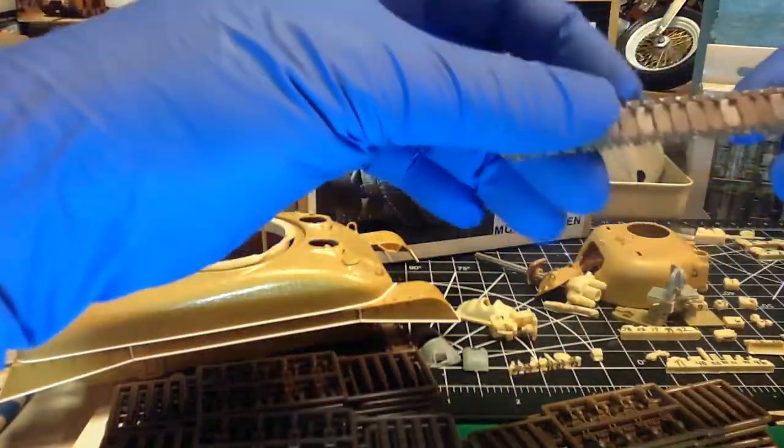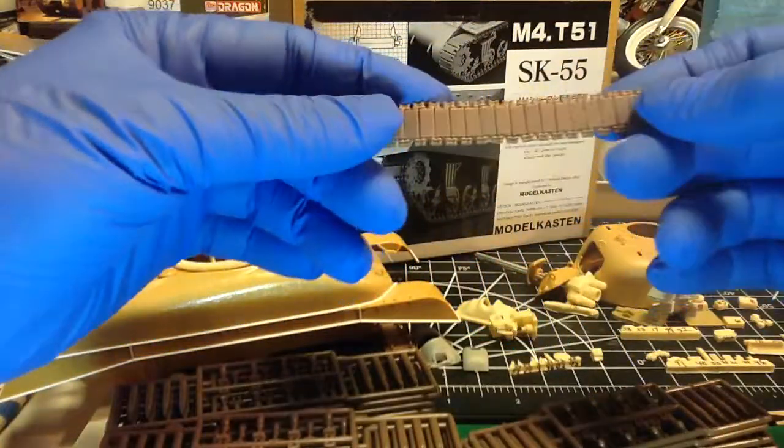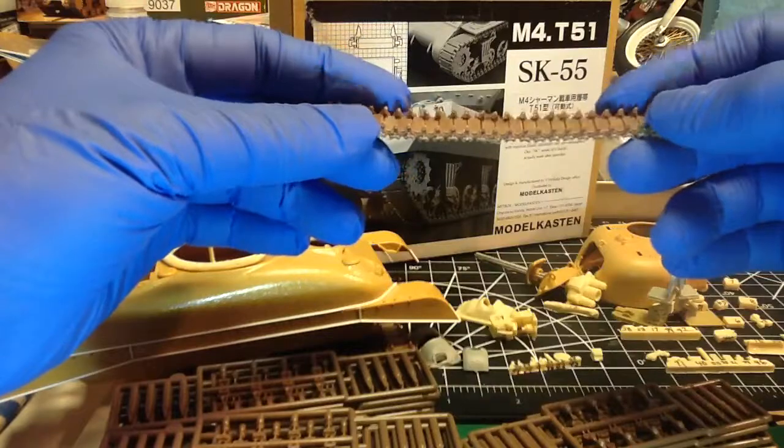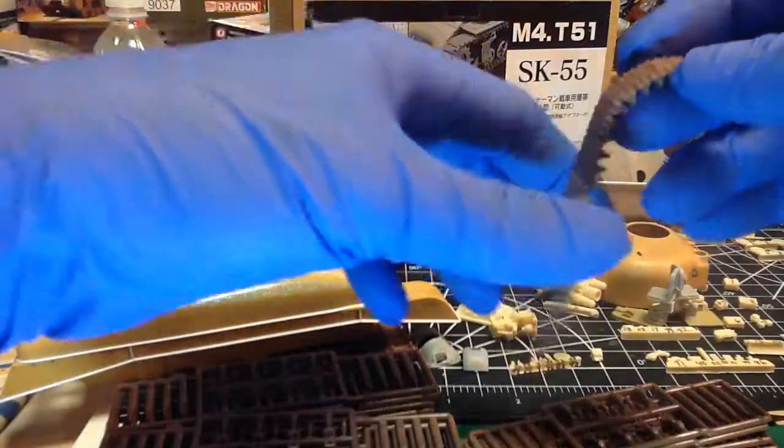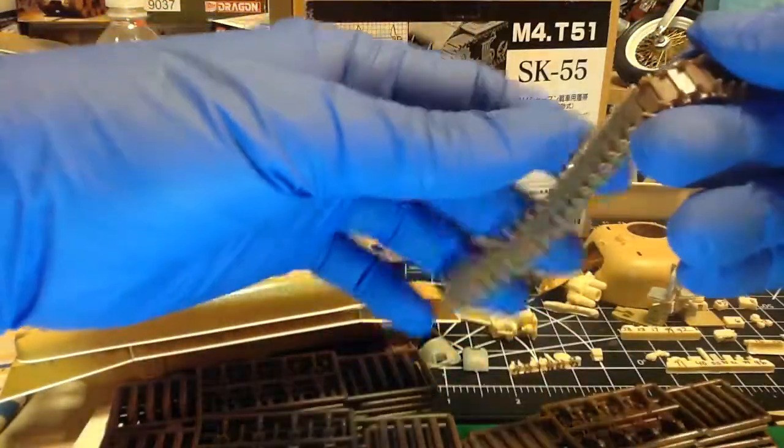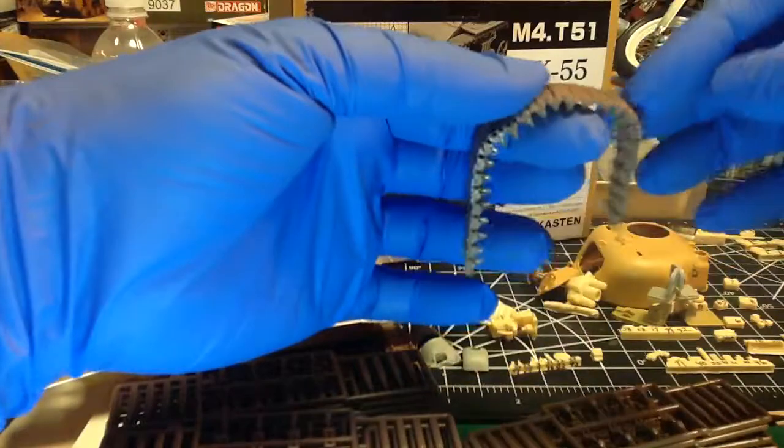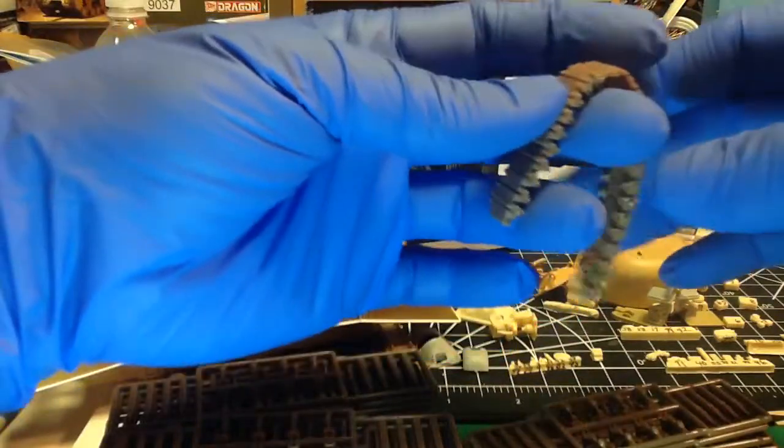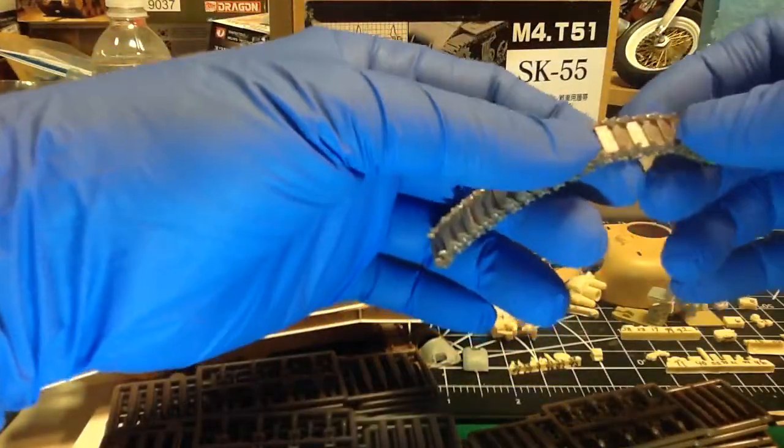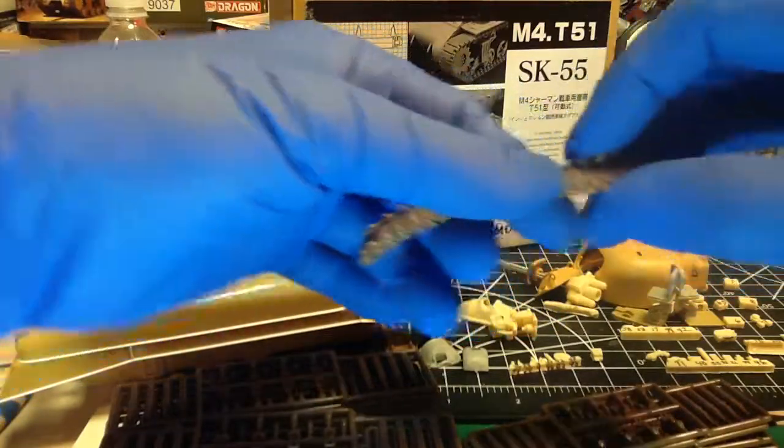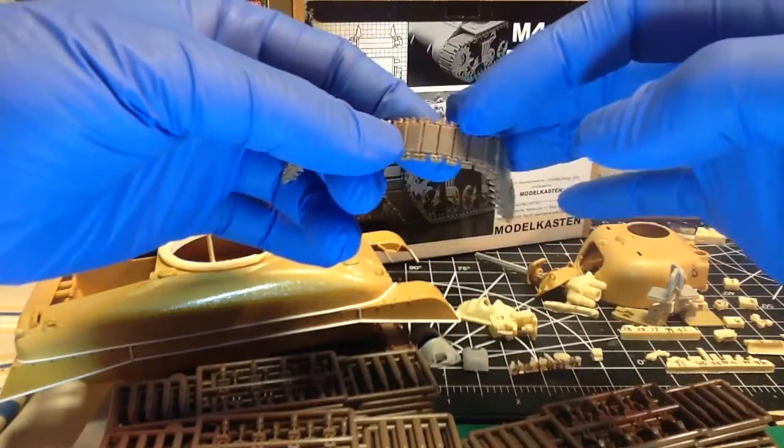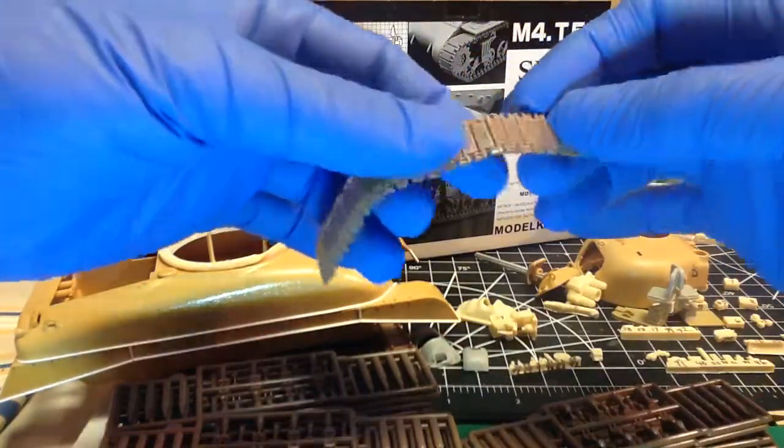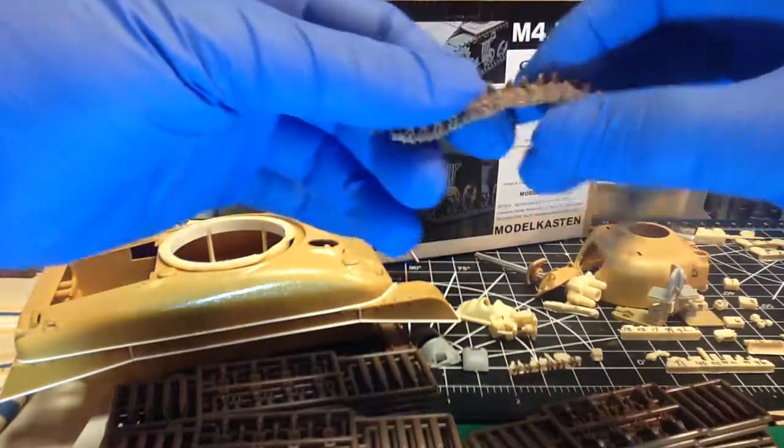All right, hello and welcome to the jungle baby. I want to show you a little flexibility, see how flexible these Model Kasten Sherman tracks can be and they're really workable. It really depends on how you glue these things together. You got your end connectors and then your pads in between. Your end connectors glue to the points coming out from the pad.